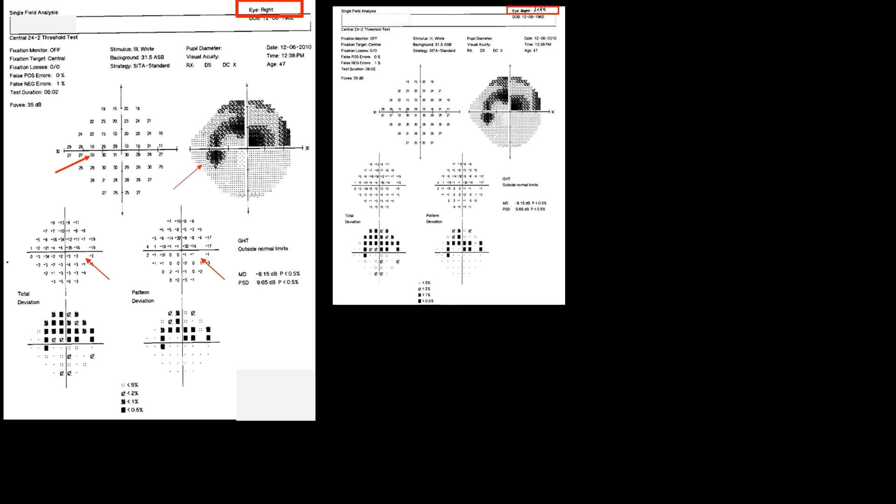This visual field printout of the right eye shows superior arcuate scotoma and the blind spot plotted on the left field of vision in the raw data and grayscale map. In both numeric and probability display of total and pattern deviation, the two points nearest to the typical location of physiological blind spot are on the right field of vision.